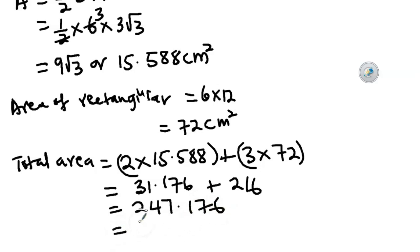And when we put them together, we are having 247.176. But we were told to correct our answer to 4 significant figures. So 4 significant figures, we add 1 to the 1. So we are going to have 247.2 cm².